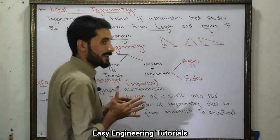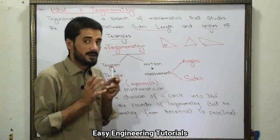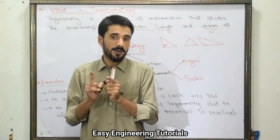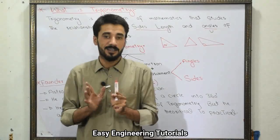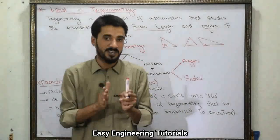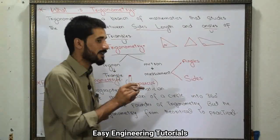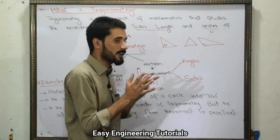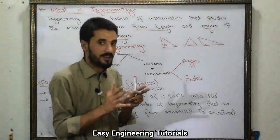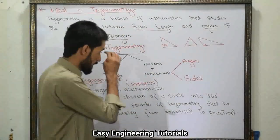Now in trigonometry, we do not only consider right angle triangles. We consider all general triangles, which include right angle triangles, acute angle triangles, and obtuse angle triangles.